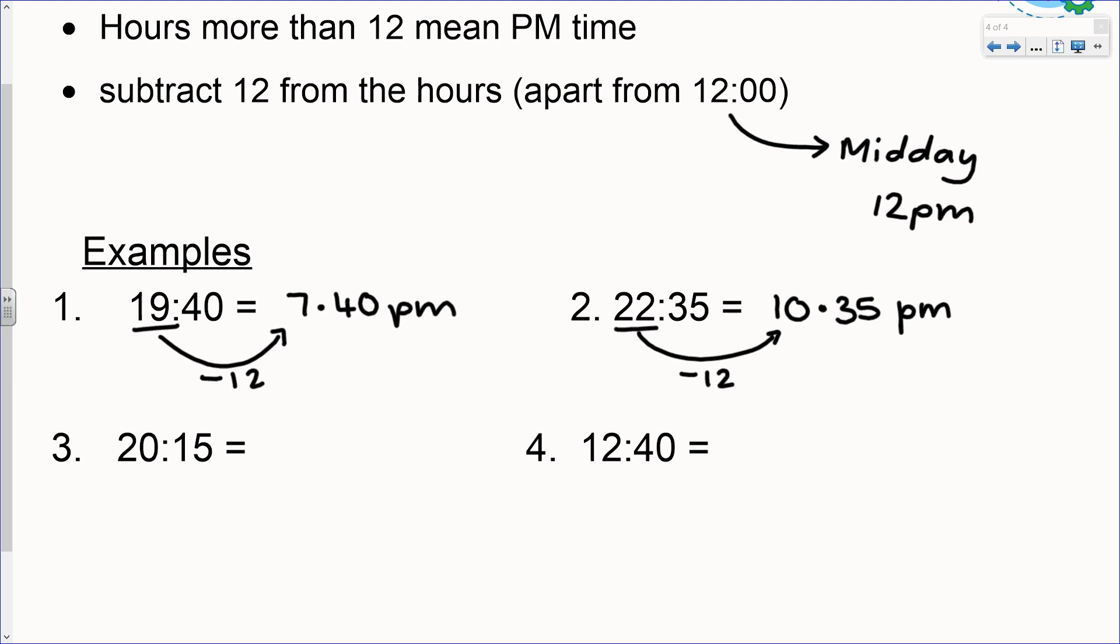Example three. Again the hours are more than 12, so that means we're past midday. So it's a pm time. We're going to subtract 12. So 20 take away 12 is 8. So that becomes 8:15 pm.